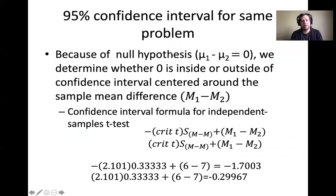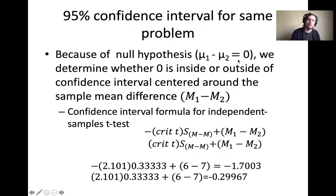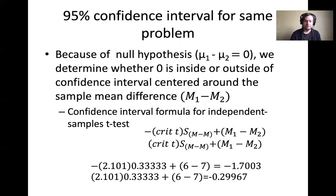Now we're going to talk about confidence intervals. We've done these for z-tests in chapter eight and for the one-sample t-test in chapter nine. Now we're doing confidence intervals for the independent samples t-test. The null hypothesis was mu1 minus mu2 equals zero — if there's no difference between the two conditions, subtracting one mean from the other should give close to zero. We determine whether zero is inside or outside our confidence interval. If zero is outside, we reject the null hypothesis; if zero is inside, we fail to reject it. Previous confidence intervals were centered around a sample mean M, but with independent measures t-test, the confidence interval is centered around the difference between M1 and M2.